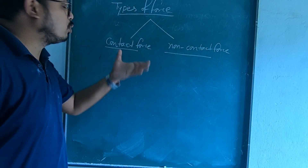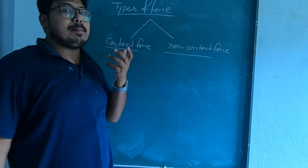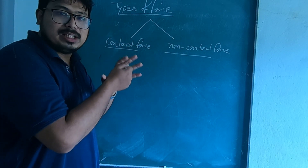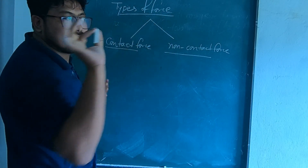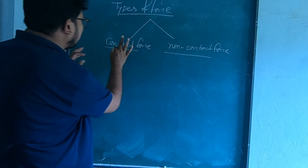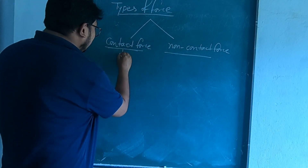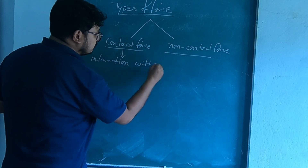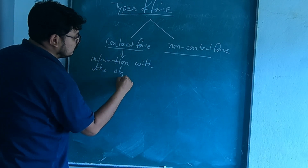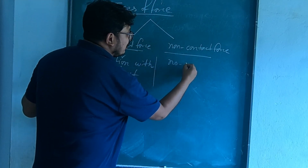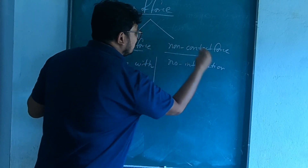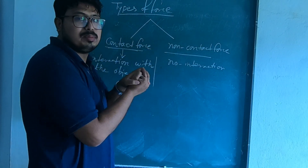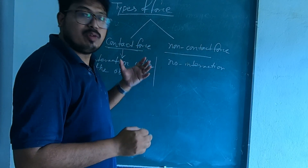Let us discuss about what is contact force. Whenever we apply force on an object, we will have interaction with the object — that means we will touch the object. For example, I am writing on the board, I am applying force on a chalk, I am touching and giving contact with the object.